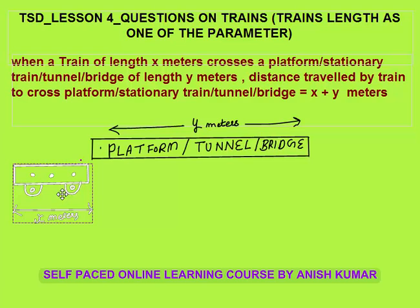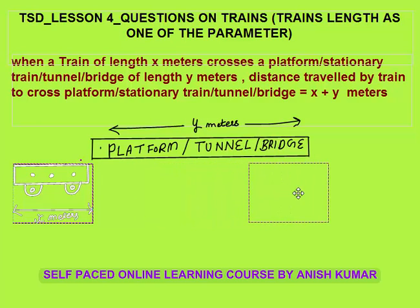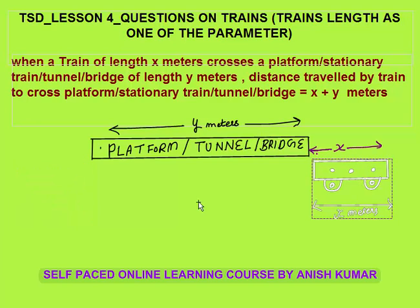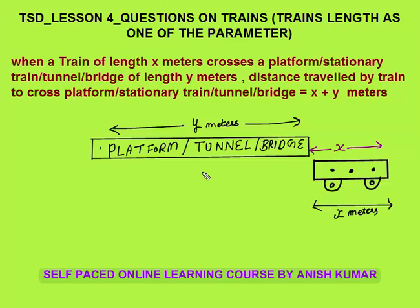Here is the train. The train has started crossing the platform. Whenever the train crosses the platform, it will travel to the far end. You can see that the total distance travelled by the train is x + y meters: first the train crosses the platform length y meters, then the train crosses its own length x meters. So whenever a train of length x meters crosses a platform or bridge or tunnel of length y meters, the distance travelled is x + y.